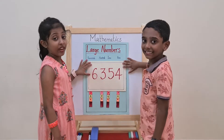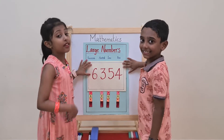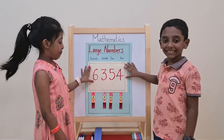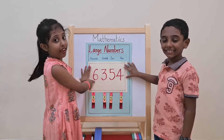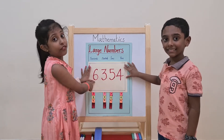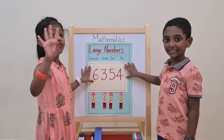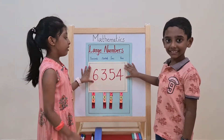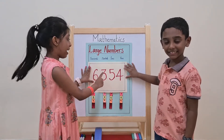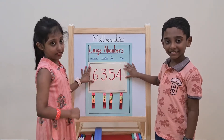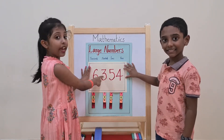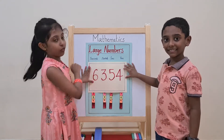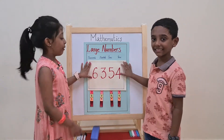When we take a number, it has face value and place value. This is the number 6354. It is a four digit number. The digit 4 is in the 1's place, 5 in the 10's place, the digit 3 is in the 100's place, and 6 in the 1000's place.